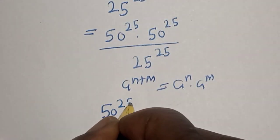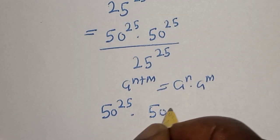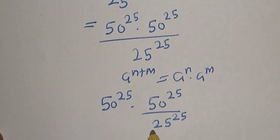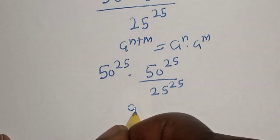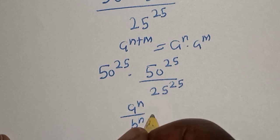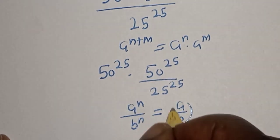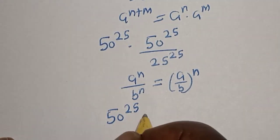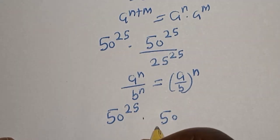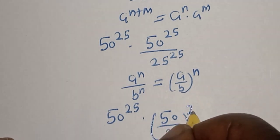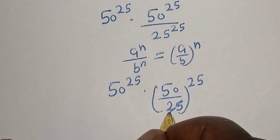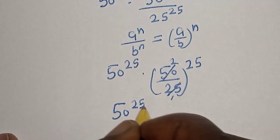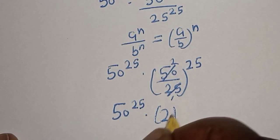We have 50 raised to power 25 multiplied by 50 raised to power 25 over 25 raised to power 25. Now remember this rule: a raised to power n divided by b raised to power n equals a over b raised to power n. So we have 50 raised to power 25 multiplied by 50 over 25 raised to power 25. Since 50 over 25 equals 2, we get 50 raised to power 25 multiplied by 2 raised to power 25.